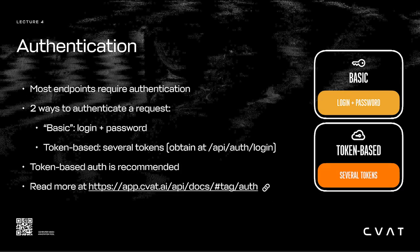Let's briefly touch on authentication. The credentials and keys I mentioned are part of the auth system. Accessing server endpoints requires authentication. There are two ways to authenticate: basic and token-based. Basic just means sending your username and password to the API/auth/login endpoint. After you successfully authenticate this way, you'll get a key or token that you can use for subsequent authentications. That is token-based authentication. We recommend using token-based authentication for better safety, since you don't need to send your credentials with each request. You can find more information about authentication at the link at the bottom.